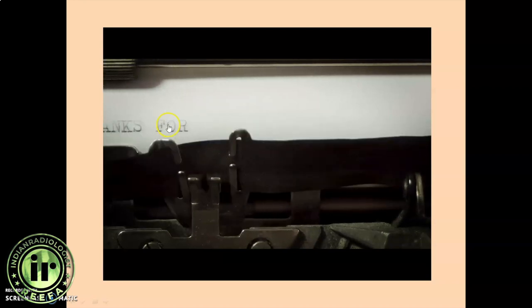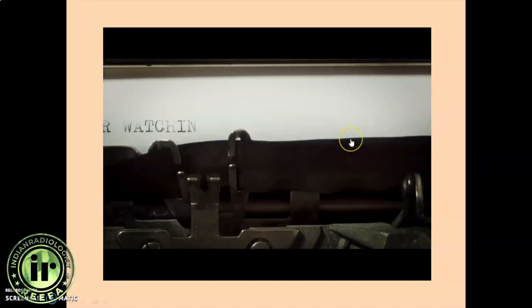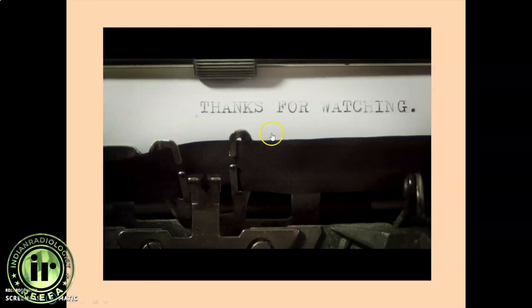So this is an example of a typewriter. You can see how the raster scan pattern is similar. First it is typing the line from left to right. And after reaching the end, it again goes back to the second line. This is similar to the raster scan pattern. Thanks for watching.